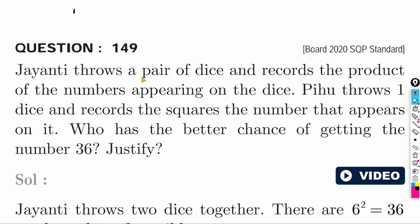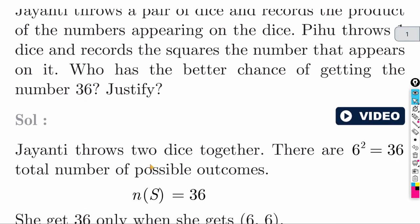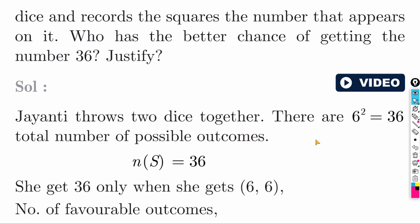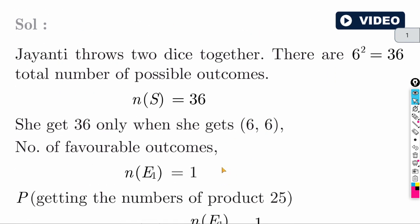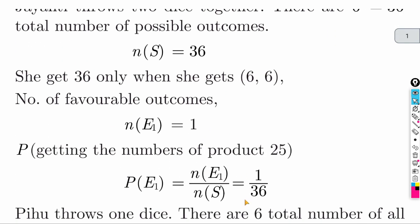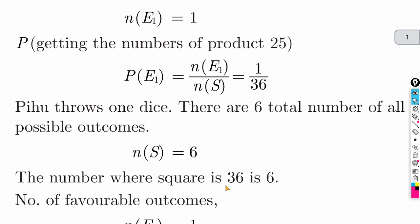Next question: Jainti throws a pair of dice and records the product of the numbers appearing. She will get 36 only when she gets 6 × 6. Number of favorable outcomes: 1. Total outcomes: 36. So the probability is 1 by 36.